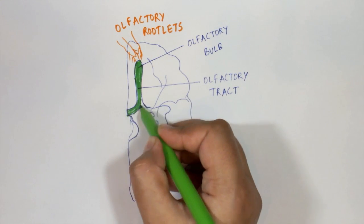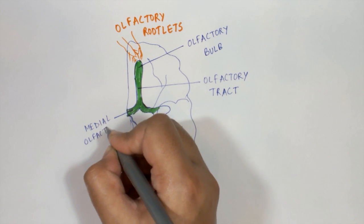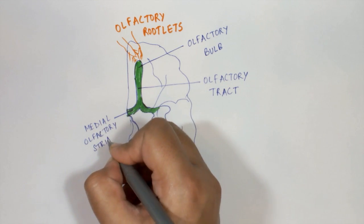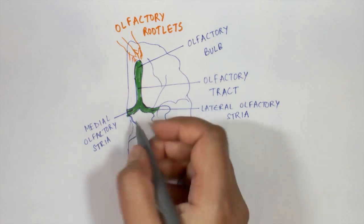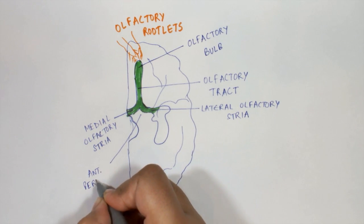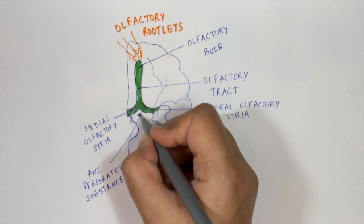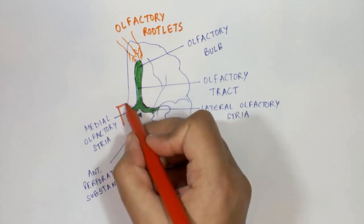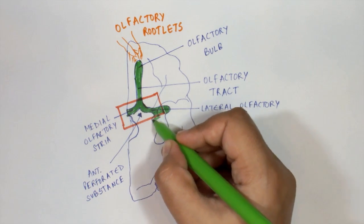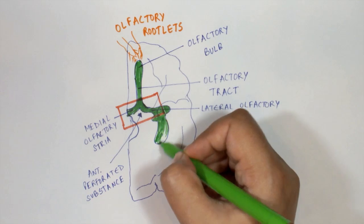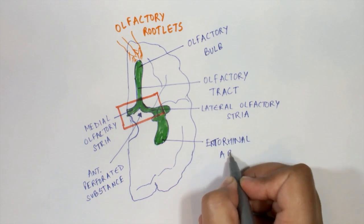The areas you are seeing here are the medial olfactory stria and the lateral olfactory stria. The area just posterior to them is the anterior perforated substance. This area forms the primary olfactory cortex, which is associated with the active perception of the sense of smell.